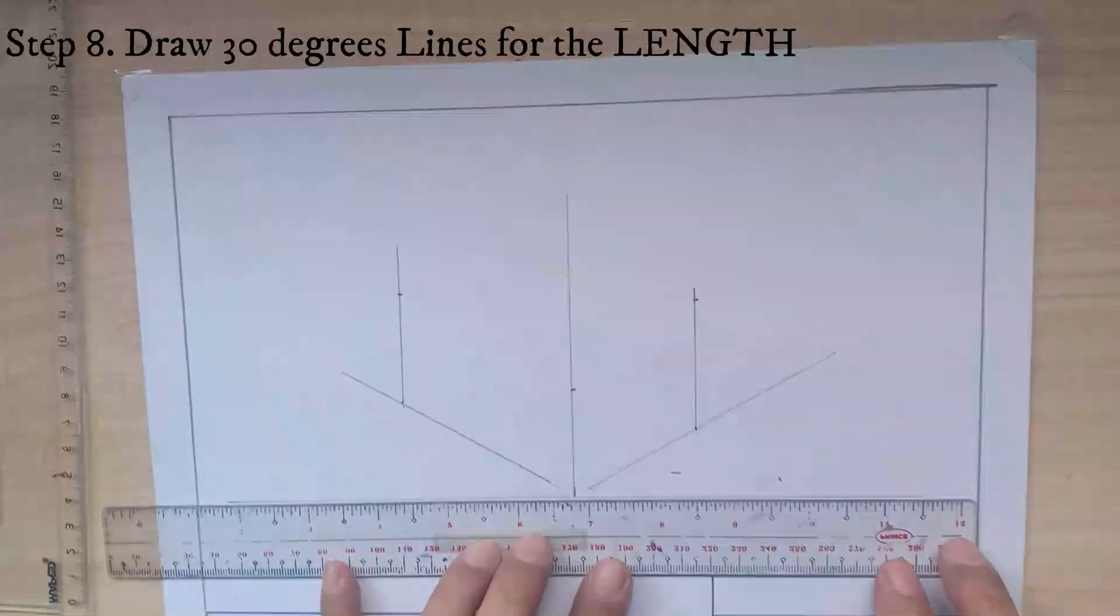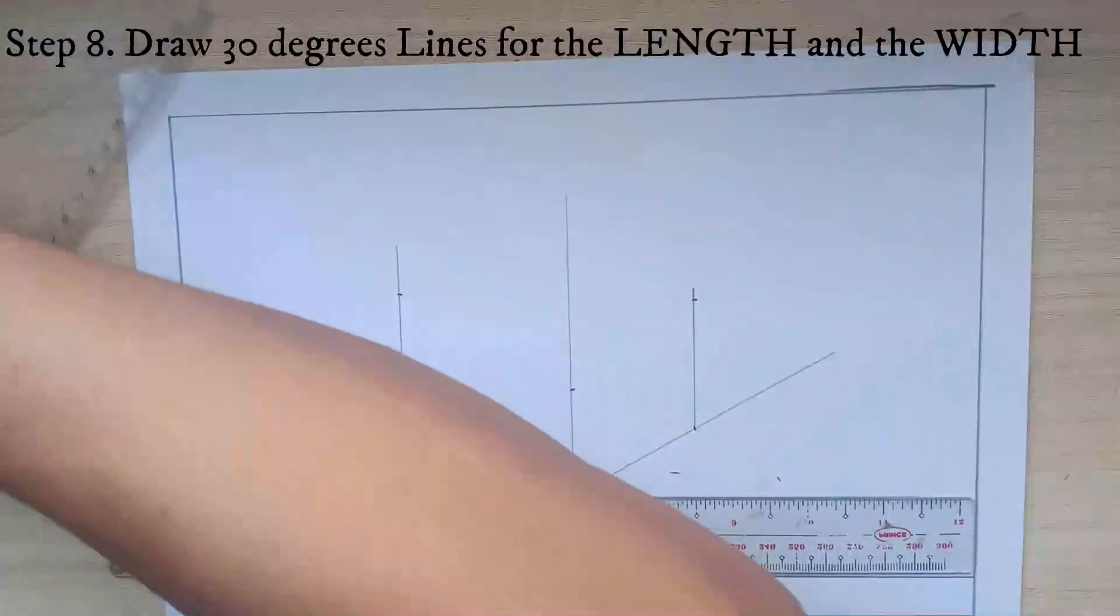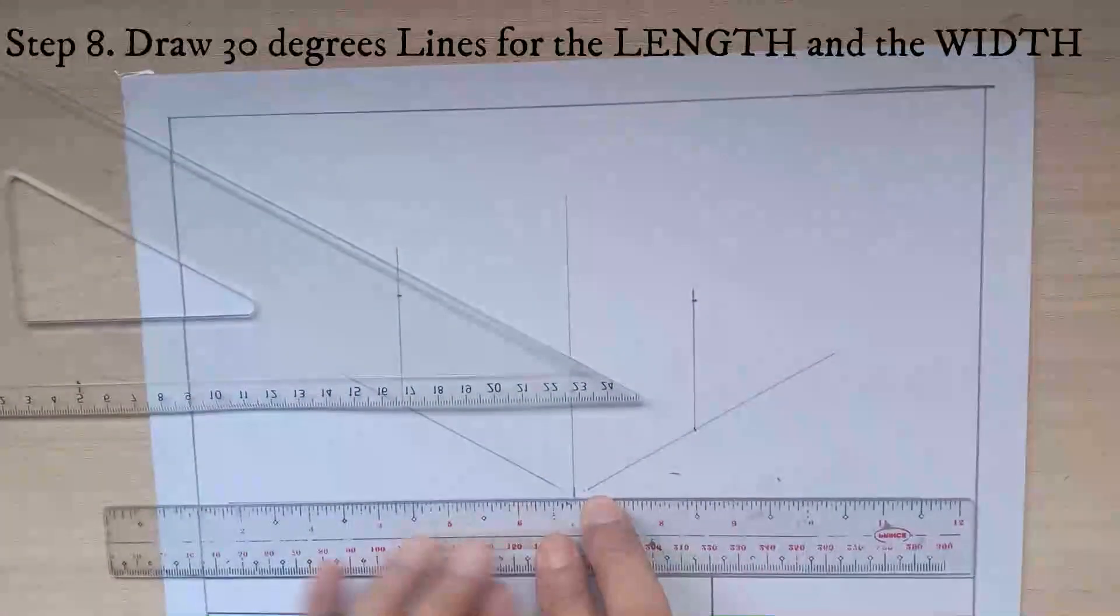Then using your ruler again, if you have a T square much better but if you don't have you can use a ruler as the base.